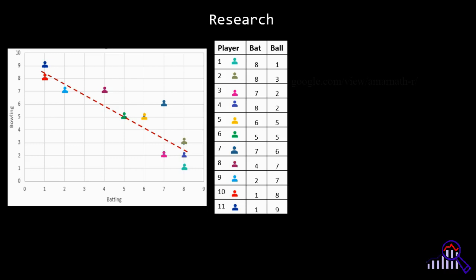Coming to the research perspective, instead of considering one regression line, we can go for piecewise regression. Let us consider players who can bat very well. So these are the four players who can bat really well. We can have a regression line which is represented in blue color. Similarly, we can have a regression line for these three players who can ball very well, represented with pink line. Whereas for all rounders, we have a regression line over here. So instead of considering this red line, we have three lines.